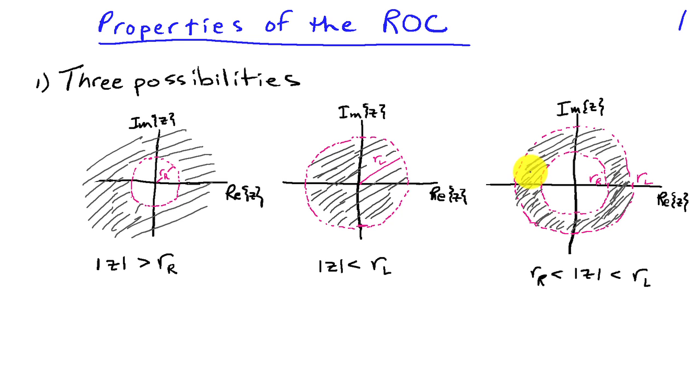In this case, when we had a signal that extended to the right and to the left, it was exponential in both directions, we had an example of the ring.